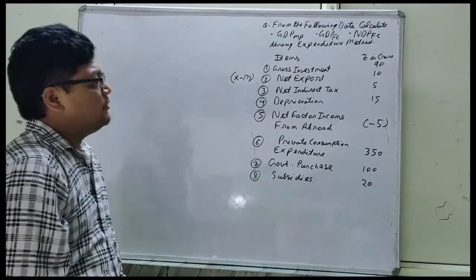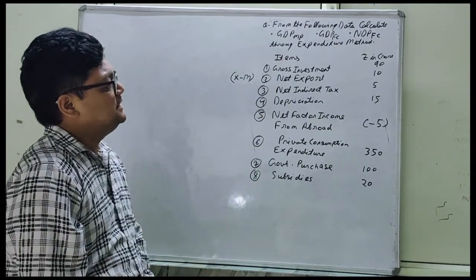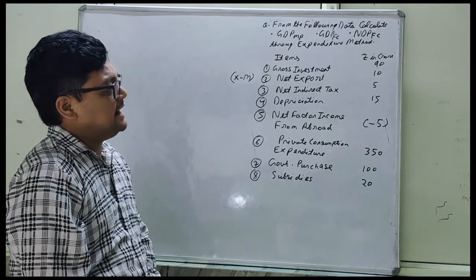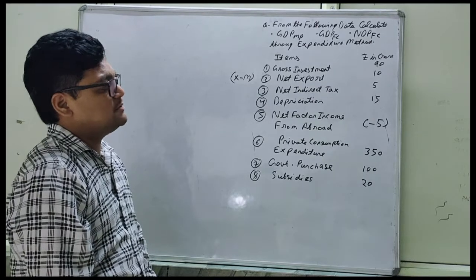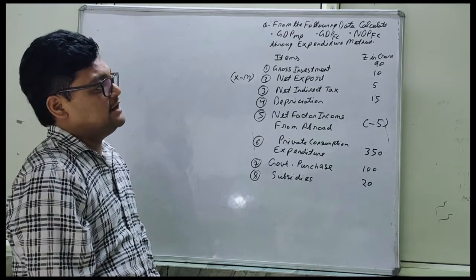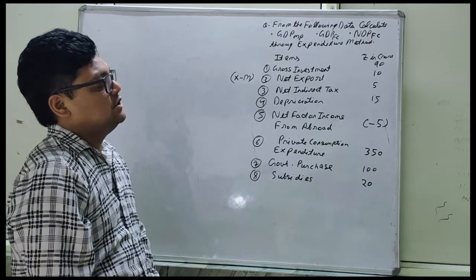From the following data, calculate GDP MP, GDP FC, NDP FC, means gross domestic product at market price, gross domestic product at factor cost, net domestic product at factor cost through expenditure method.